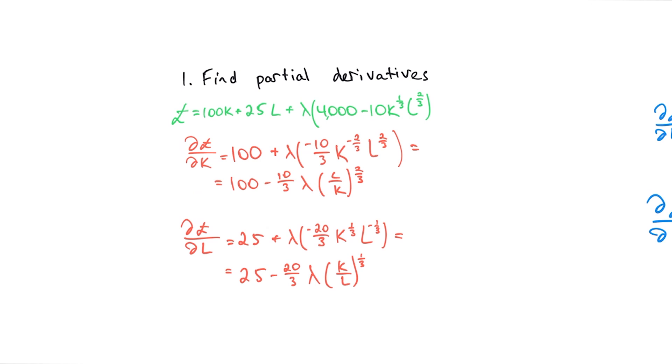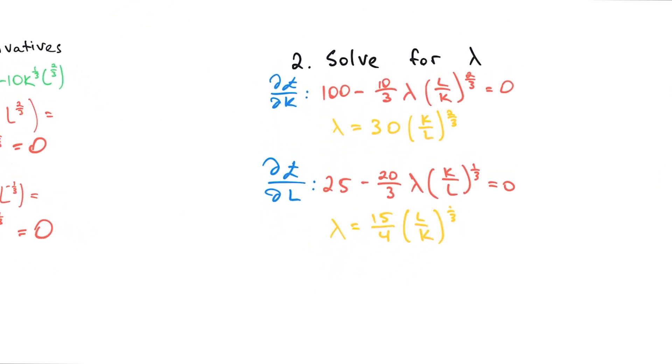Let's get to step number two. Here we have to solve for lambda. We know that we already have the partial derivatives, so all we have to do is carry over the lambda on both sides and we'll have these two neat little equations.